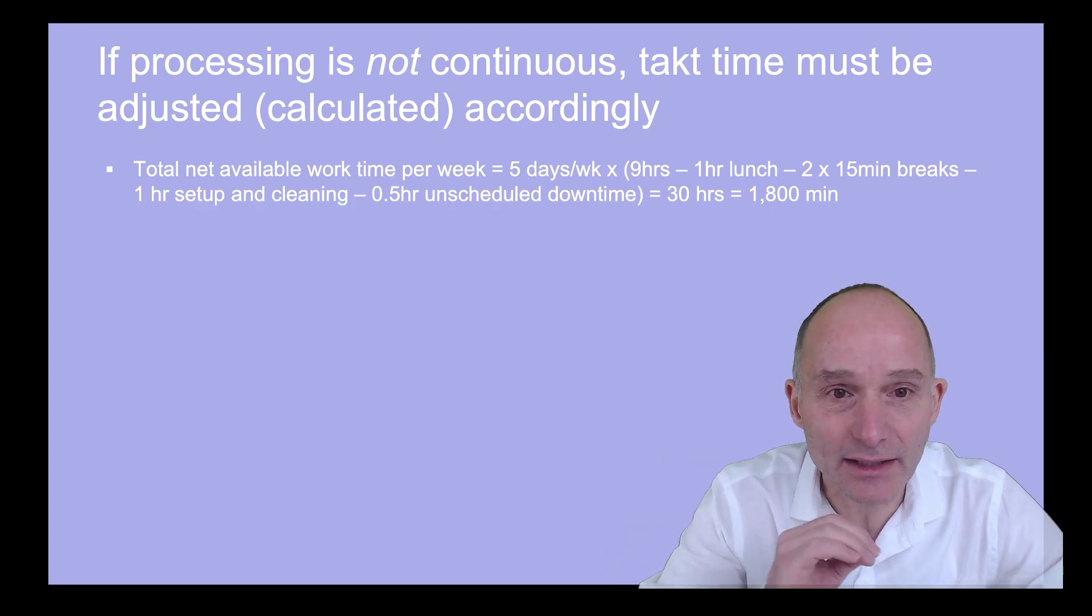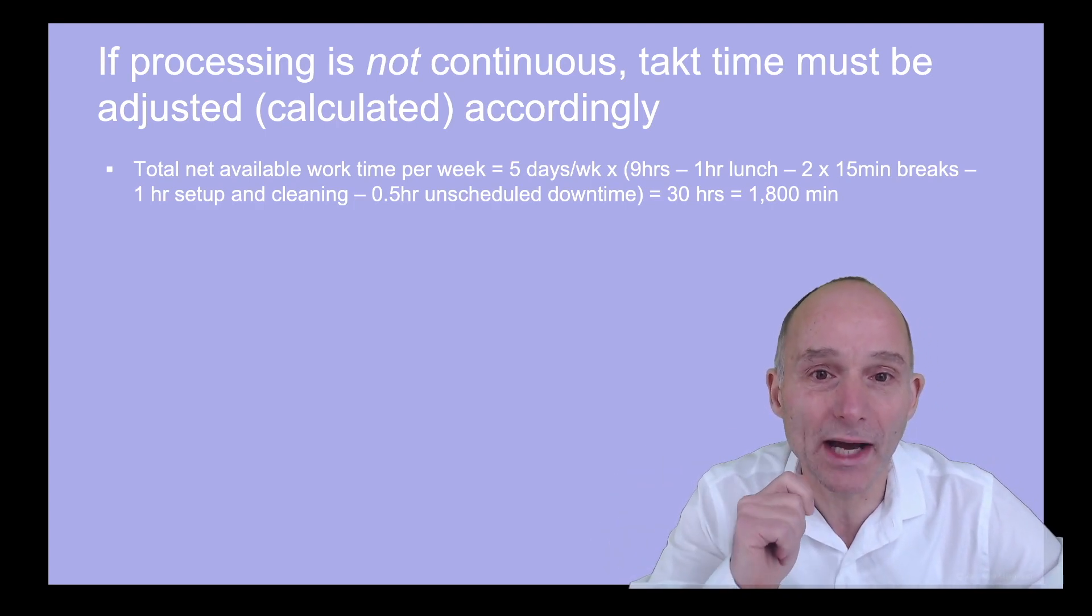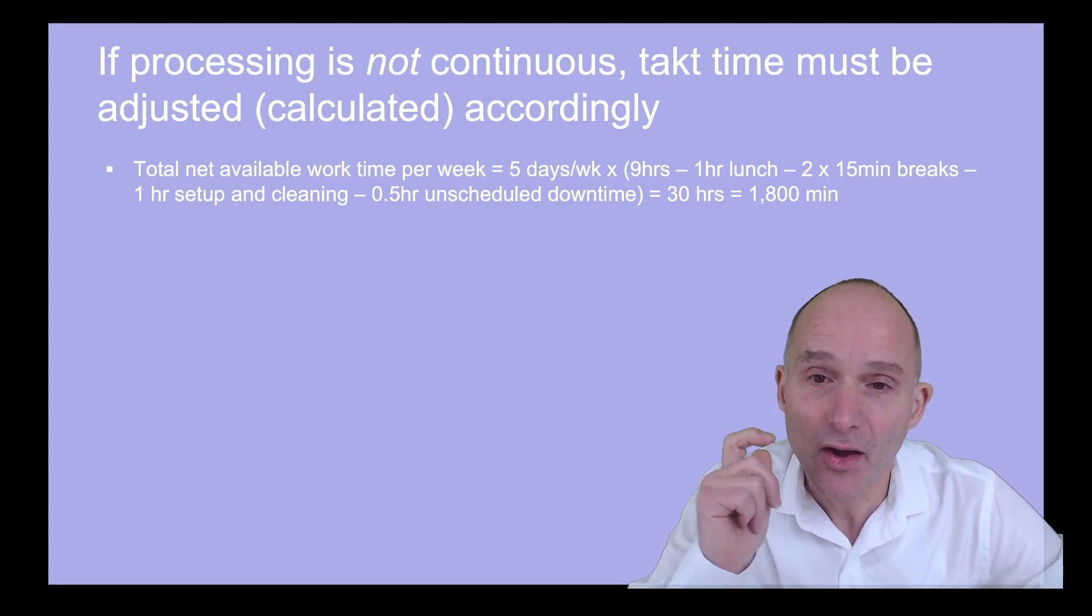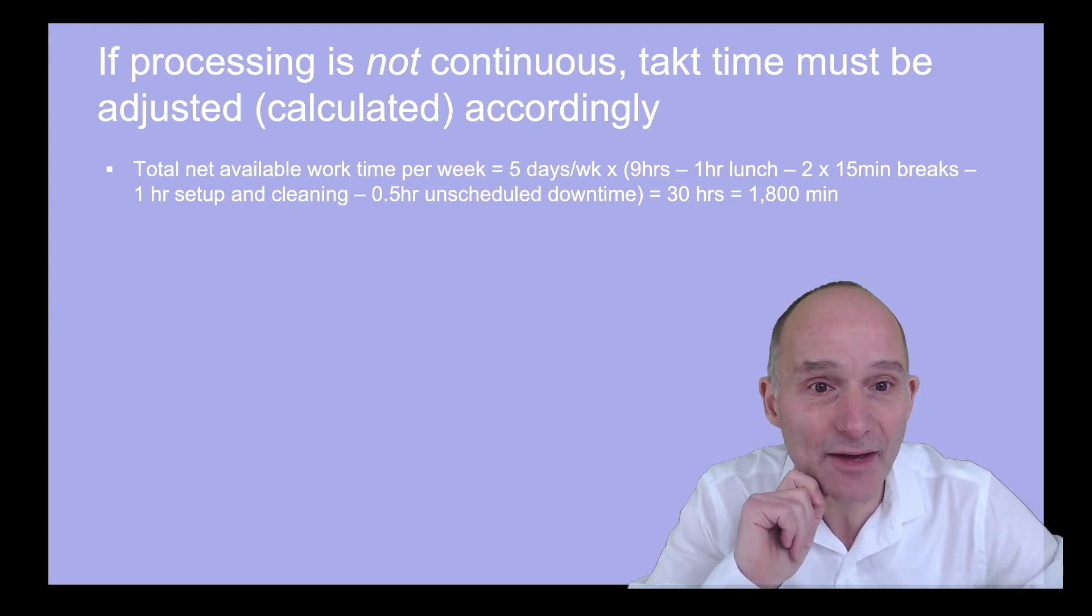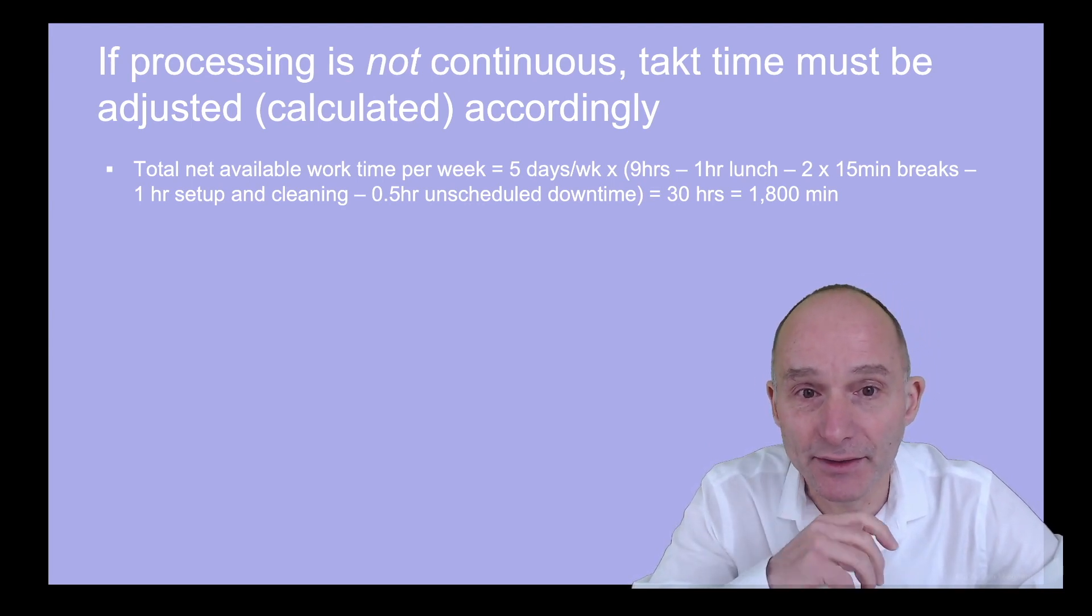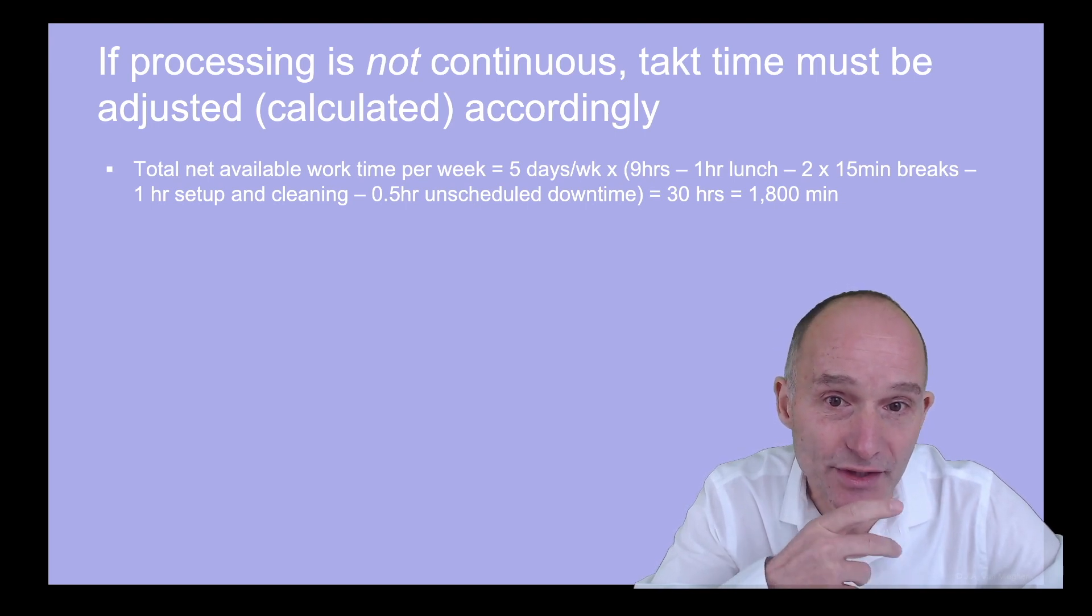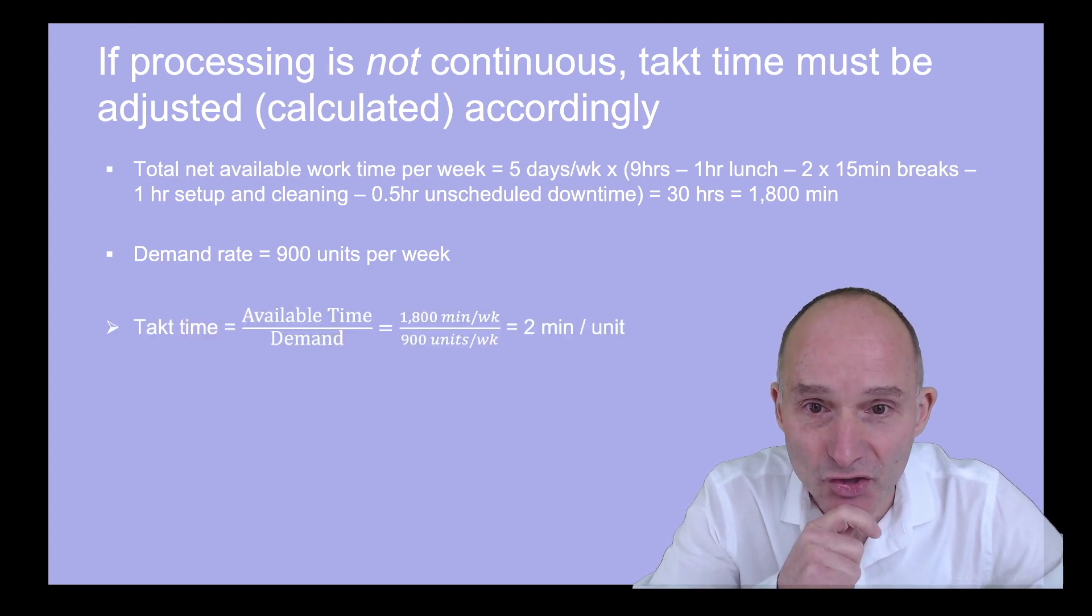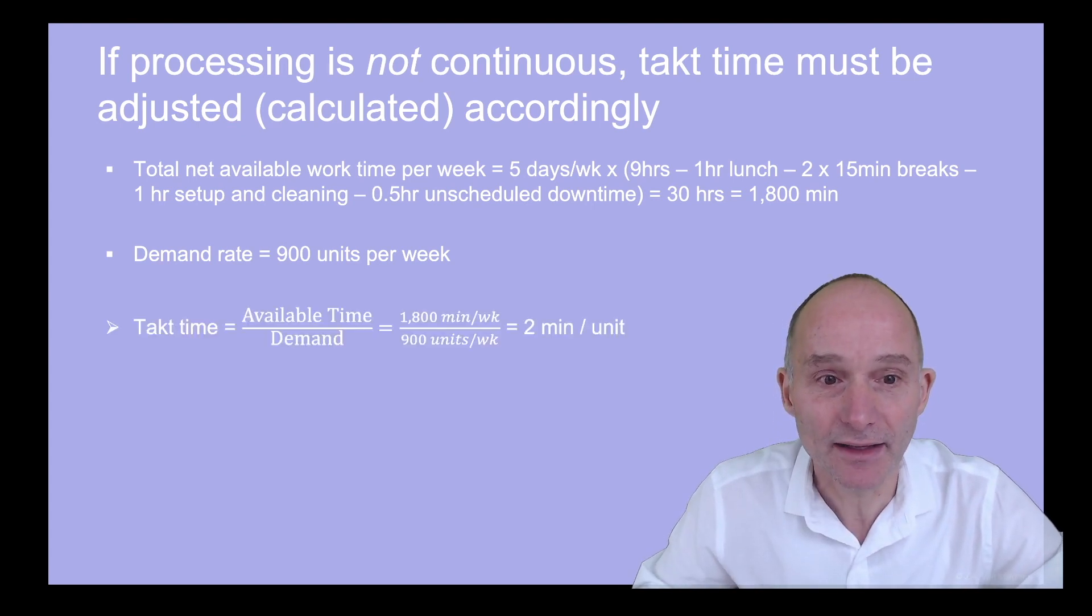Say each 9 to 5 shift includes a 1 hour lunch break, 2 15 minute coffee breaks, 1 hour setup in the morning and a clean up in the evening, and on average, half an hour of unscheduled downtime. Then the net available work time per week is 30 hours or 1800 minutes. So if the demand rate is 900 units per week, the production takt time per unit is 2 minutes.